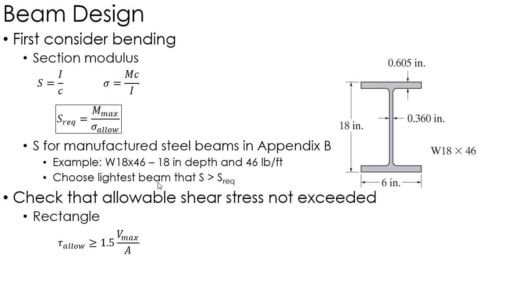So if you've got a rectangular beam, we can approximate the shear stress as just 1.5 times the maximum shear over the cross-sectional area. Again, that's just an approximation. There's an example in the book if you want to see where that comes from.